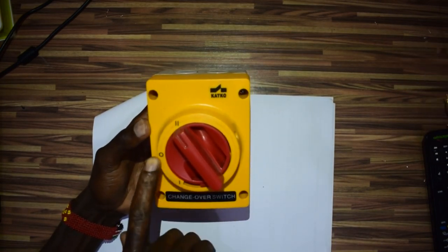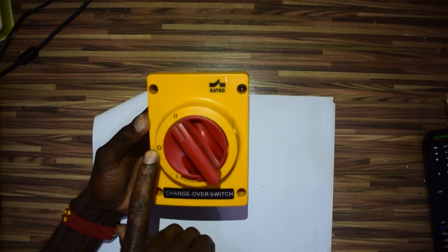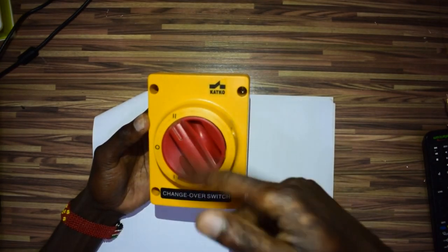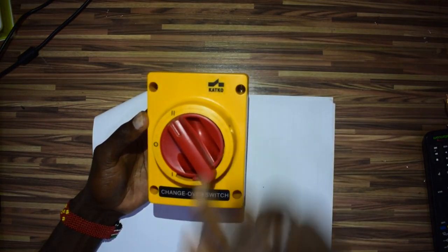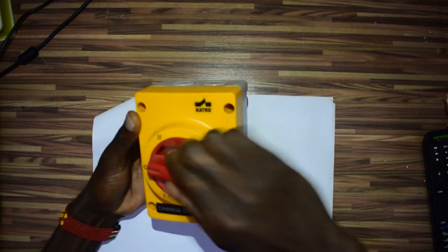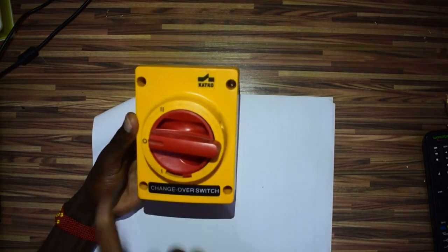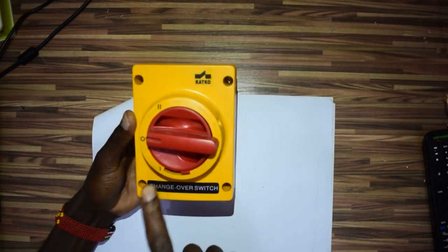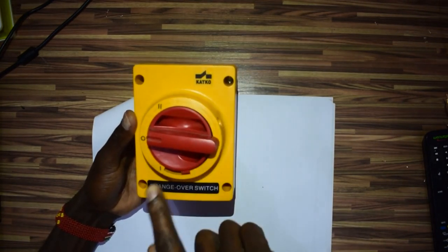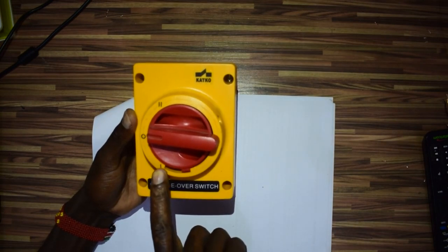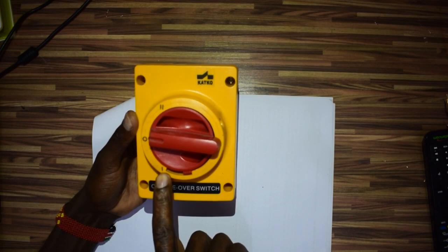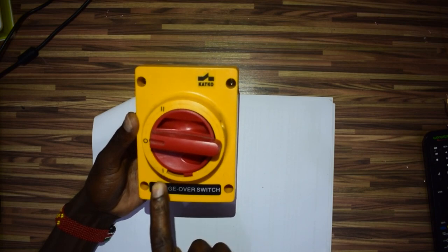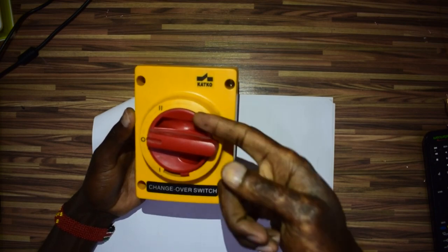It has a zero position, which means it's not connected to either side of the power. Then we have positions two and one. You can choose to connect your main power source from the utility company to one, and your backup power from a generator to number two.